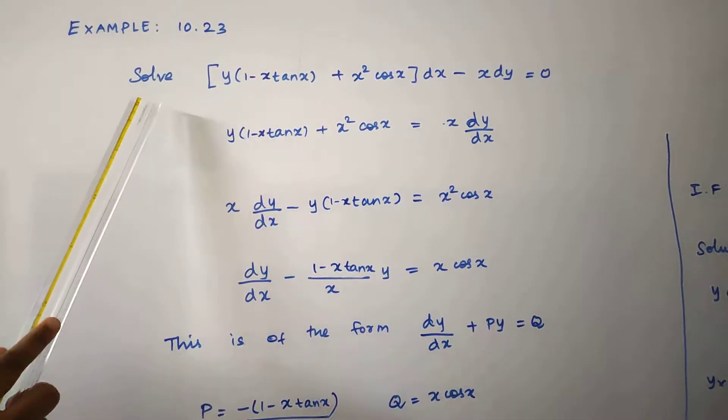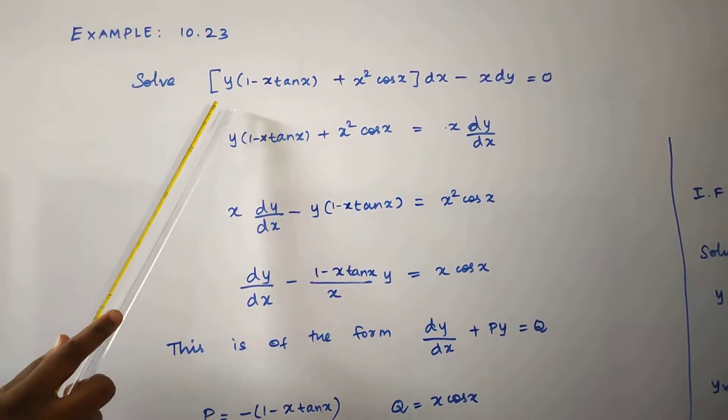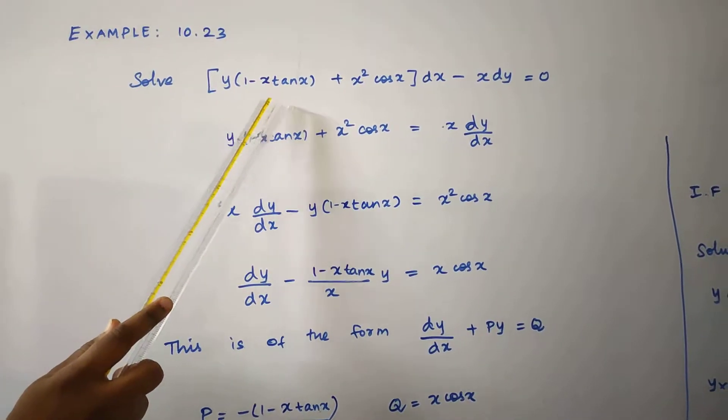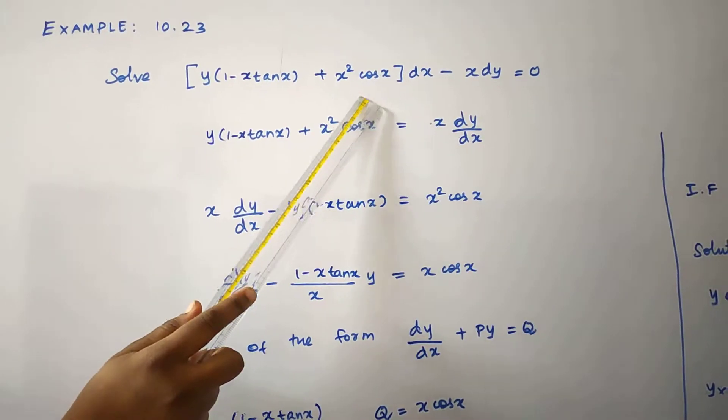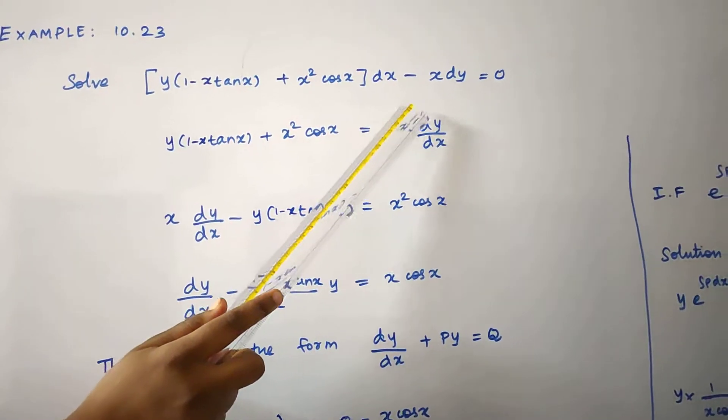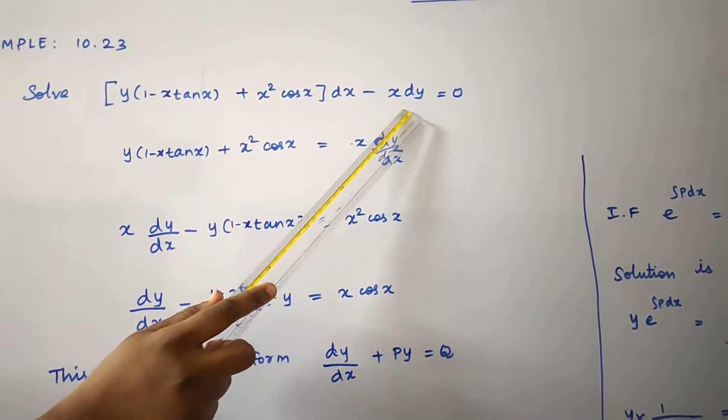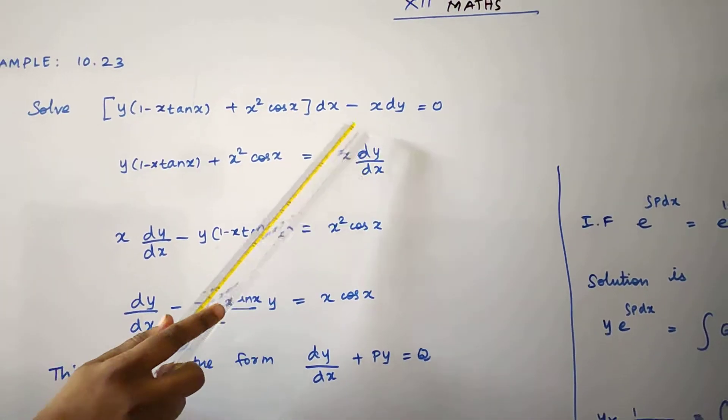For example, problem 10.23: solve y into (1 minus x·tan(x) plus x²·cos(x)) dx minus x·dy equal to 0.